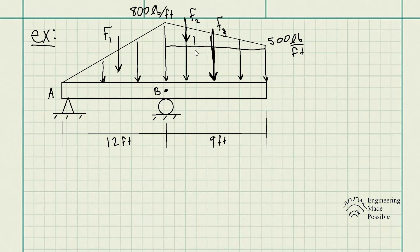The resultant force for all the distributed loading — let's call it FR — would be located somewhere along the beam, and the distance from point B to that location is x̄_R. That's what we're solving for: the resultant force and its location with respect to point B.